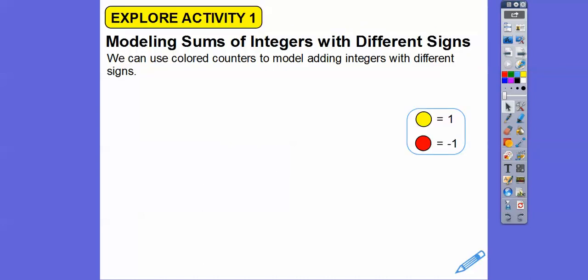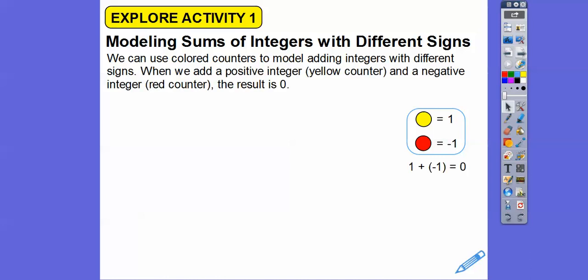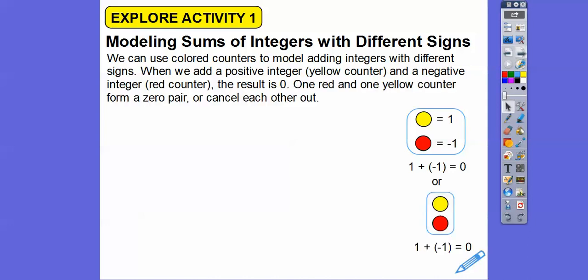We can use color counters to model adding integers that have different signs. Here's an example: we can add a positive integer — a yellow counter — and a negative integer — a red counter — which is like adding 0 because 1 plus negative 1 equals 0. One red counter and one yellow counter form a zero pair and cancel each other out.